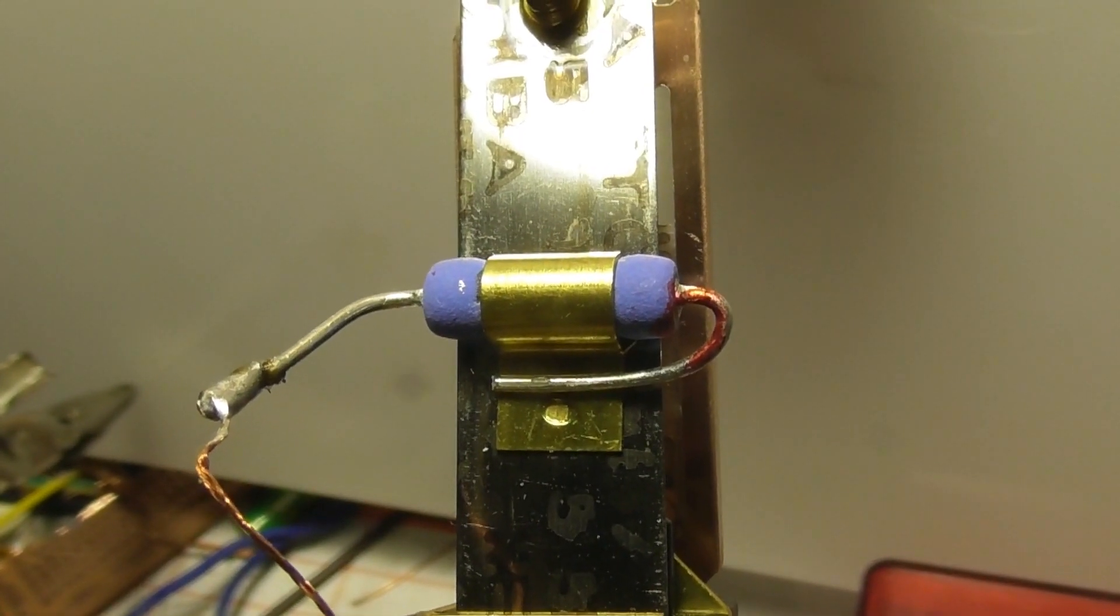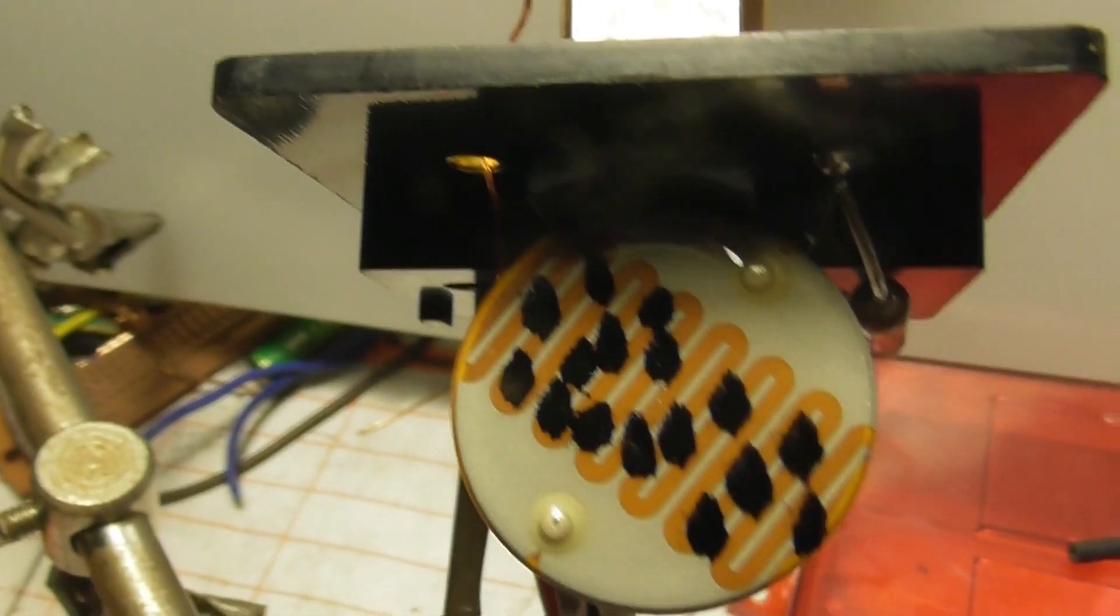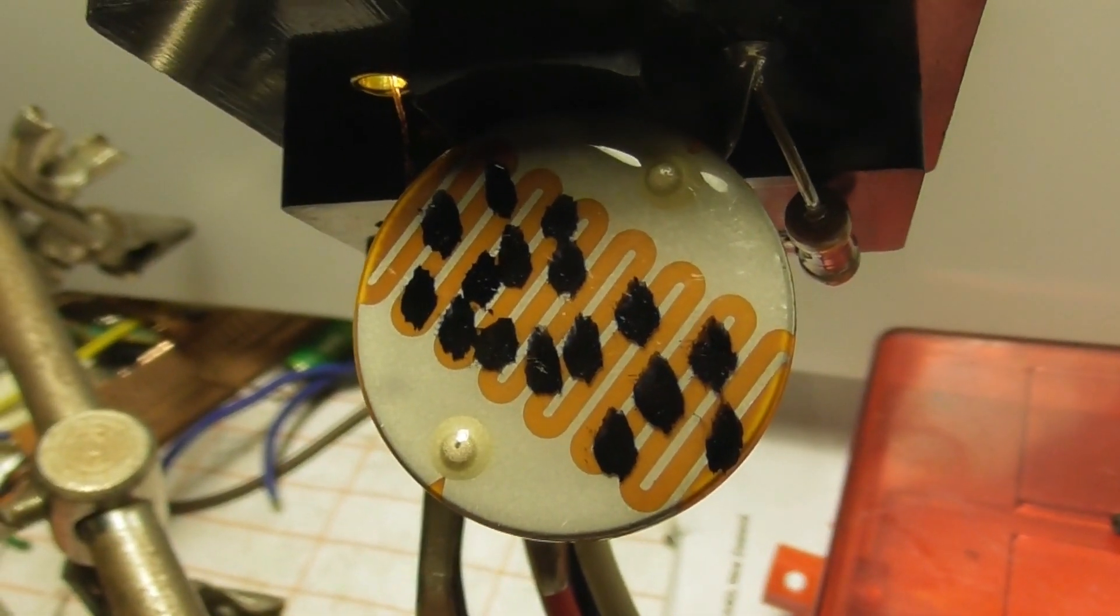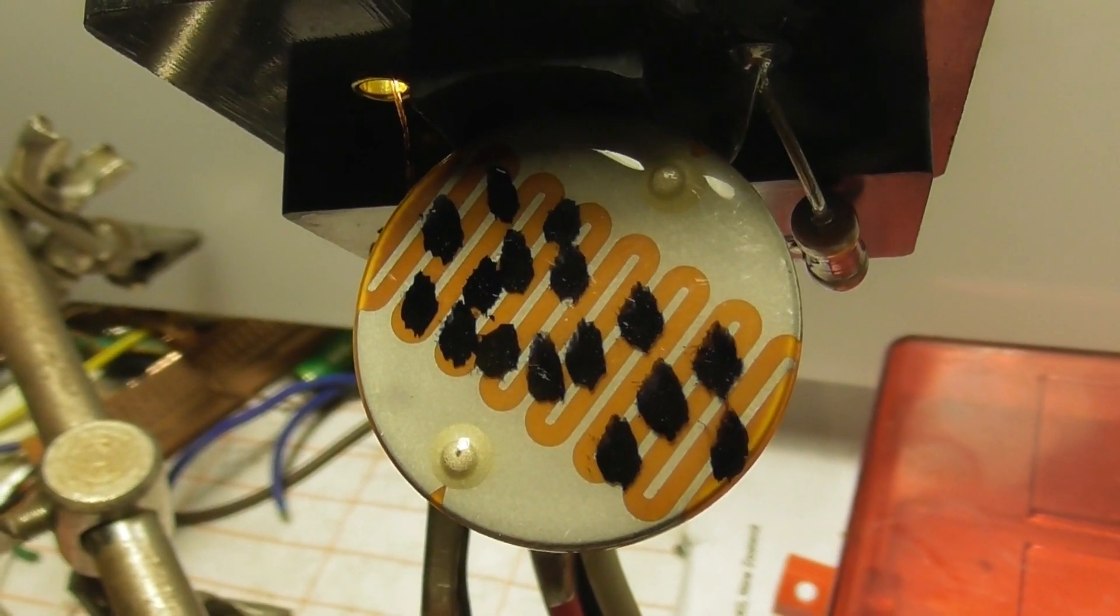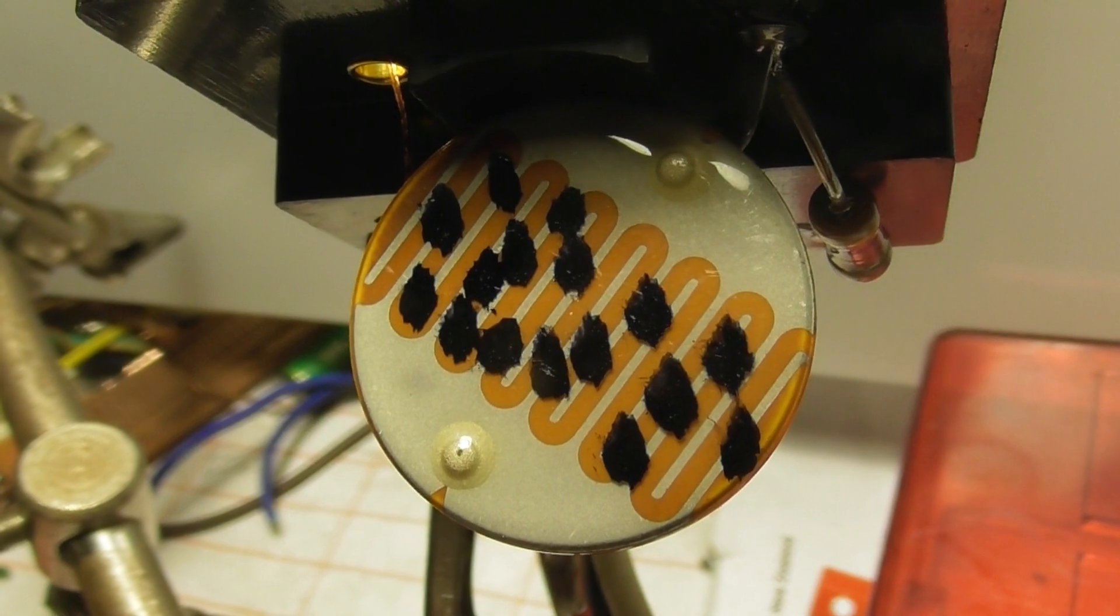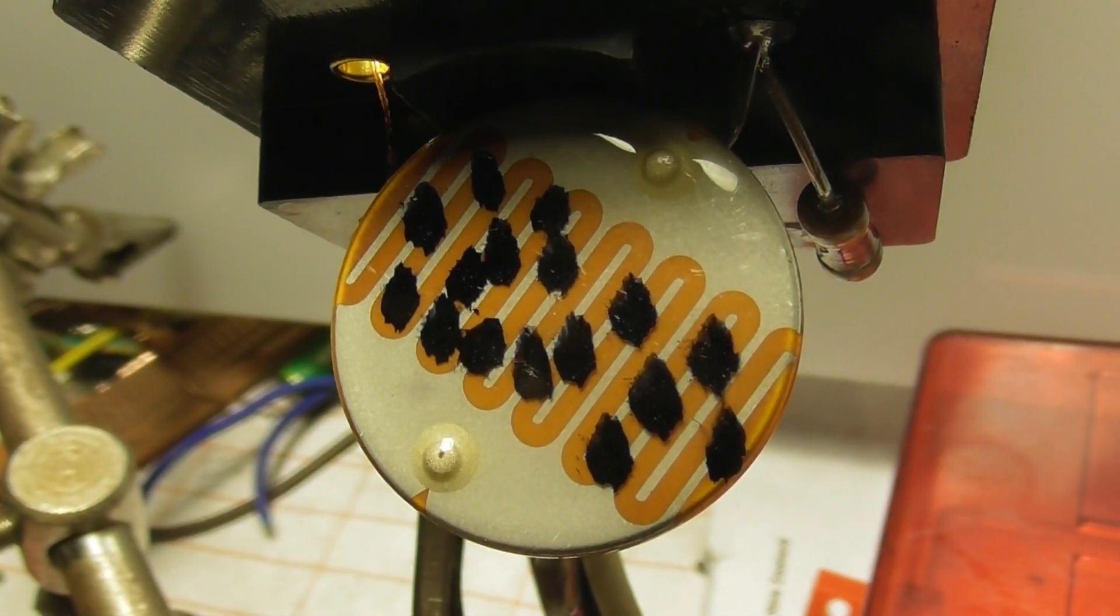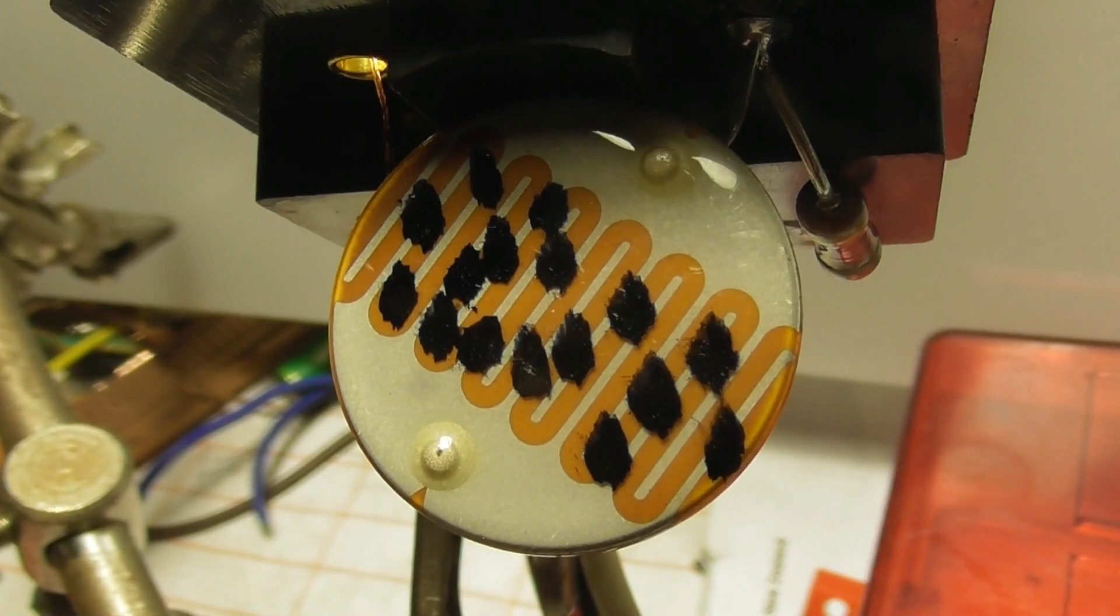This is the wire-wound resistor and here's the LDR. The black dots are put on to make the cell more or less sensitive to light. They make it darker for a certain lux setting. That's the way they've done it on this particular device.